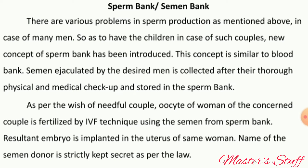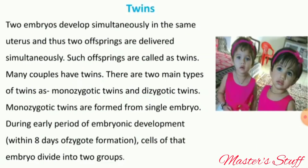Twins: Two embryos develop simultaneously in the same uterus, and thus two offspring are delivered simultaneously. Such offspring are called twins. Sometimes two embryos are implanted in the uterus and two offspring are delivered.